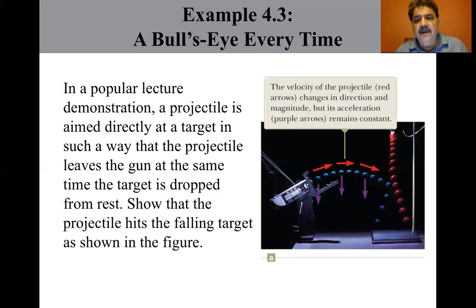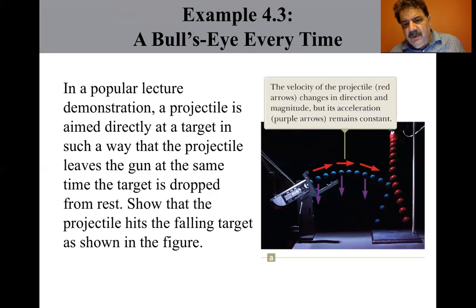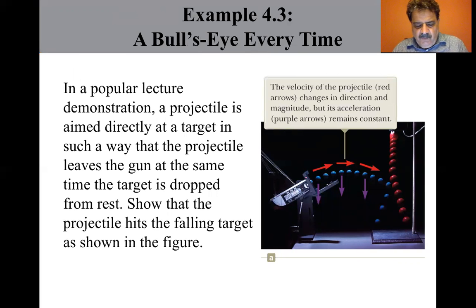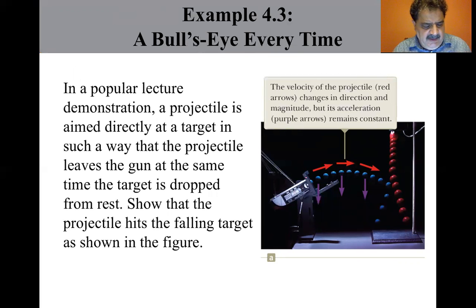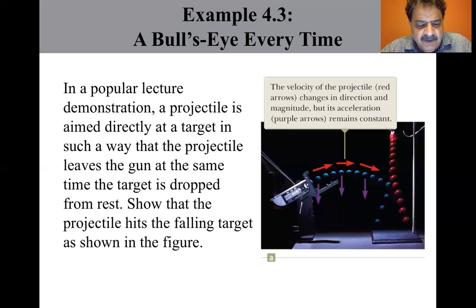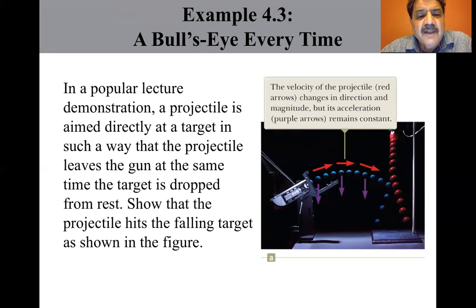Let's look at another. I'm going to show you a video of this — it's a little hard to reproduce in our lab. I forget if it's MIT or Harvard, one of their physics departments. It's called 'A Bullseye Every Time.' In a popular lecture demonstration, the projectile is aimed directly at a target such that the projectile leaves the gun at the same time the target is dropped from rest. Show that the projectile hits the falling target.